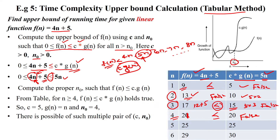At n = 5: f(5) = 4(5) + 5 = 25 and 5(5) = 25. Now 25 ≤ 25, which is true. So the condition f(n) ≤ c·g(n) is satisfied for the first time at n = 5.